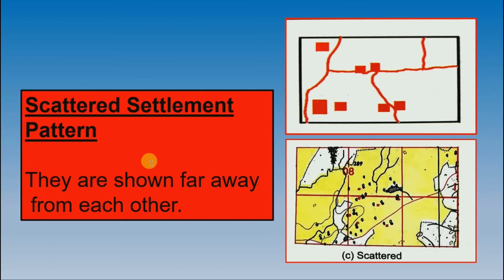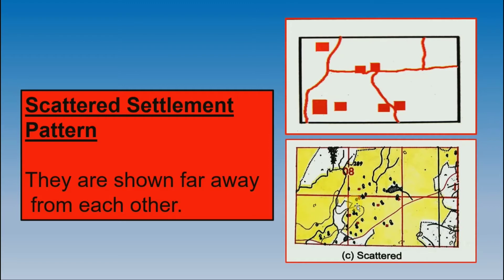The next one is scattered settlement. When interpreting scattered settlement, remember the definition — they are shown far away from each other. These red boxes are shown far away from each other, meaning they are not close together. You can see on the diagram they are shown far away from each other, so they are called scattered settlement. In your textbook the red boxes will be very small, and you can see they are not close — they are scattered, far away from each other. When asked to interpret what type of settlement is in a grid, you would write scattered settlement.